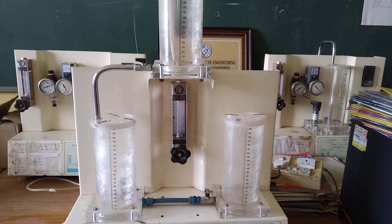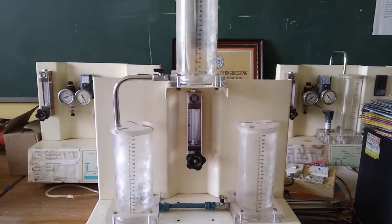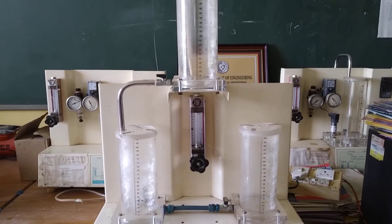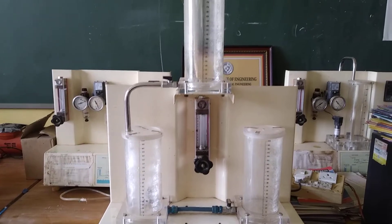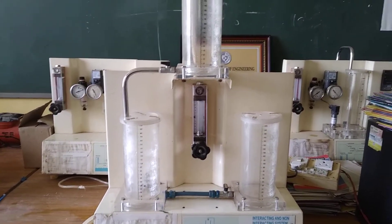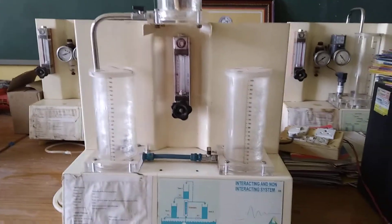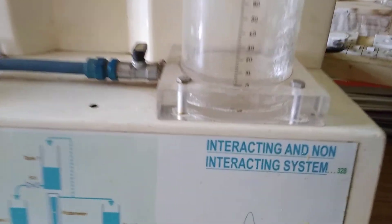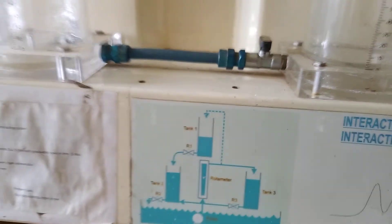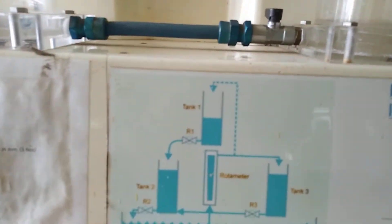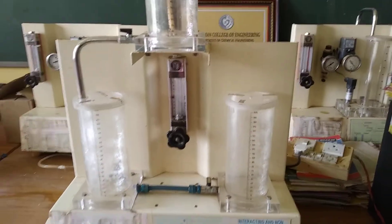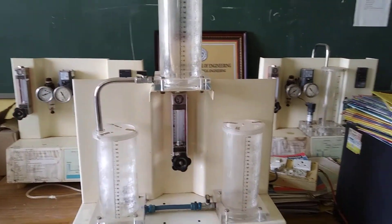Dear students, welcome to your process control laboratory. Like other labs, in this laboratory we will conduct 10 experiments. Before going to conduct the first experiment, let me explain you about the setup. This one is your interacting and non-interacting system. And this is the graphical representation of this setup. By the help of this setup we can conduct 10 experiments.